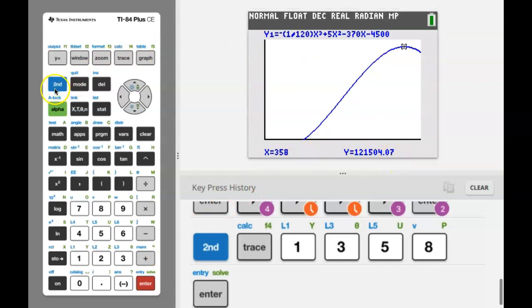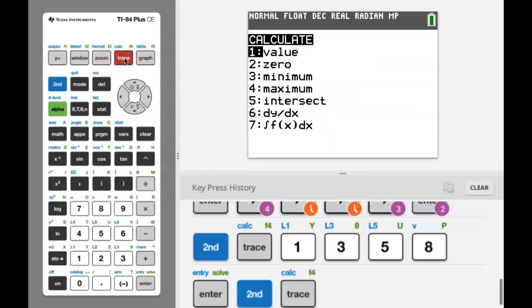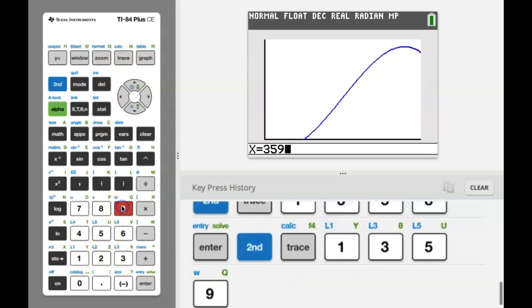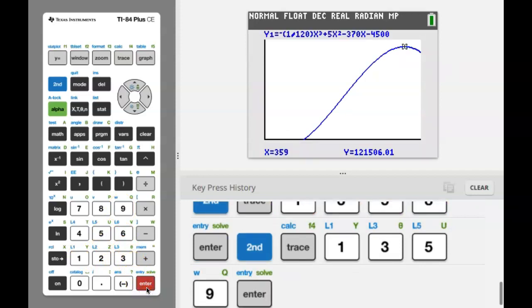Now let's do the same thing and enter 359 boats. 2nd, Calc, choose number 1, Value, and enter 359 this time. And you notice the profit is actually a little bit larger. $121,506 is the profit for making 359 boats. And there's about a $2 difference. So yes, the company should increase their production and they should increase it to making 359 boats each week in order to maximize their profit.